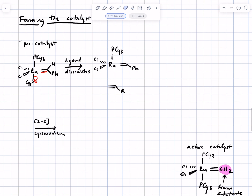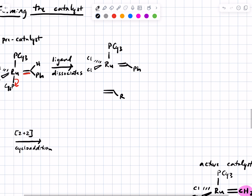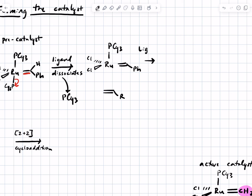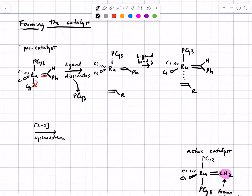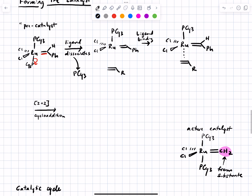We lose the phosphine ligand, then the substrate binds to the metal. It binds as an L-type ligand — the pi electrons are simply coordinating the metal. Then here's that alkylidene ligand. What happens next is the 2+2 cycloaddition I was referring to.